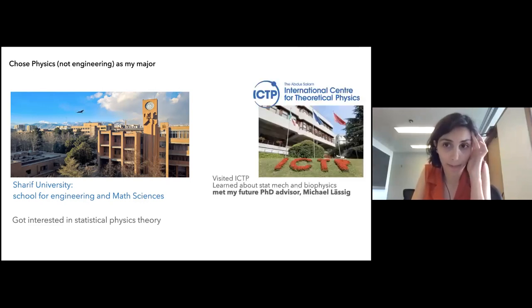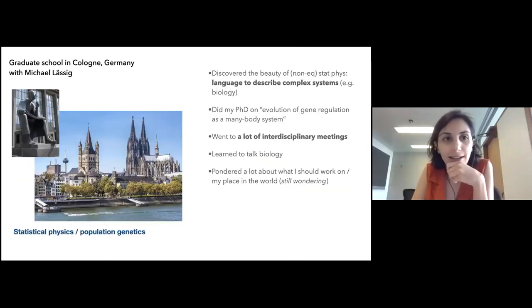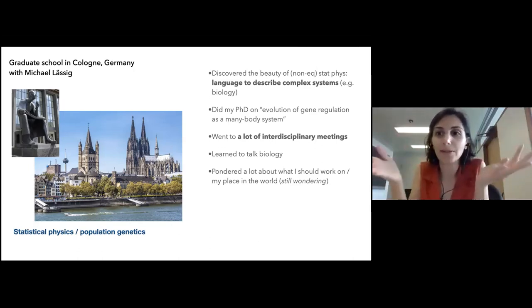I started learning about statistical physics and what it can do. By just sheer luck I went to ICTP summer school in Trieste for a program that was on statistical physics and biophysics at the end of my second year at the university. There I met my future PhD advisor Michael Lässig and I learned basically a lot about how research is done in the broader community. A bunch of random events basically led to the fact that I went to graduate school in Cologne in Germany and I did my PhD with Michael Lässig at the interface of statistical physics, population genetics, and evolutionary theory.